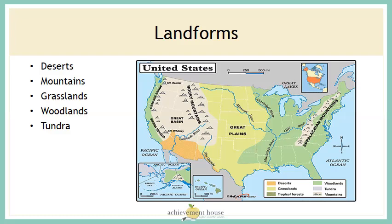This physical map of the United States shows landforms. Use the key at the bottom of the map to understand what the colors identify. We have deserts, mountains, grasslands, woodlands, and tundra. Take a look at the east coast — the Appalachian Mountains run right through the state of Pennsylvania, so some of you may live in a very mountainous area. Understanding the landforms of a country impacts homeowners, businesses, and farms. If you want to open a ski resort, you're not going to move to the Great Plains — you want to move to the area with the mountains.